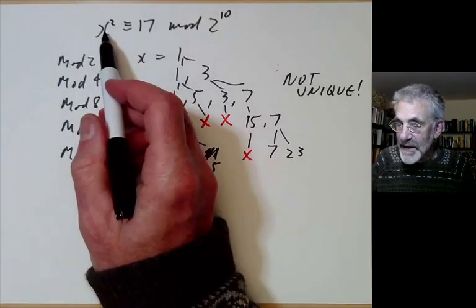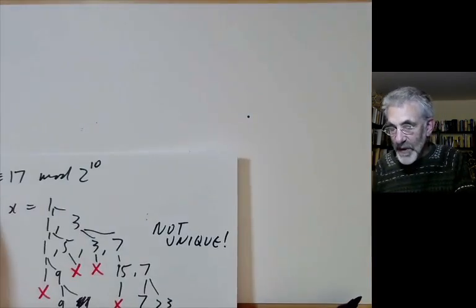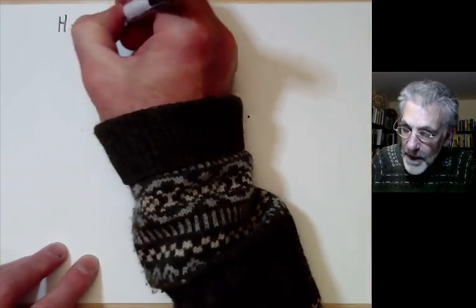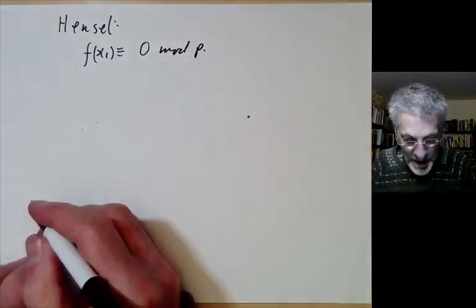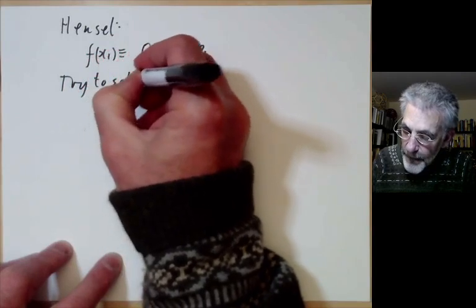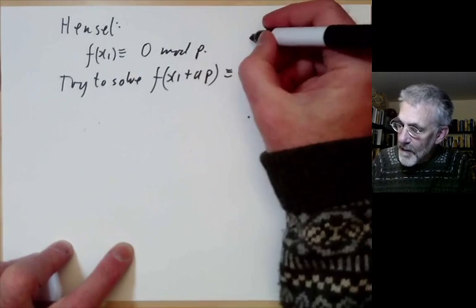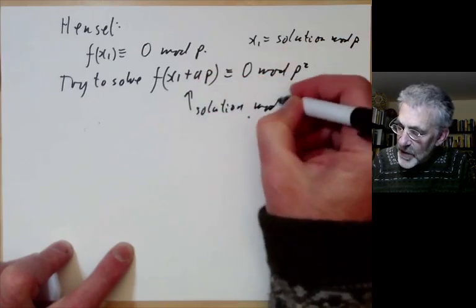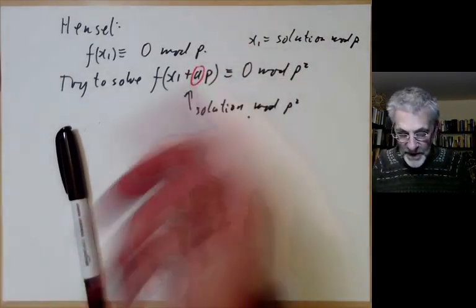Now we get to Hensel's lemma, which partly explains why some examples go wrong and others work. Suppose we've solved f(x₁) ≡ 0 mod p, and we try to solve f(x₁ + ap) ≡ 0 mod p² — that is, we want to lift the solution mod p to a solution mod p² by adding a multiple of p. We need to find a.